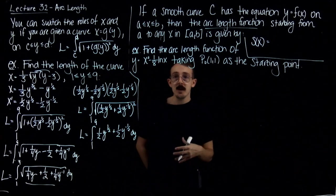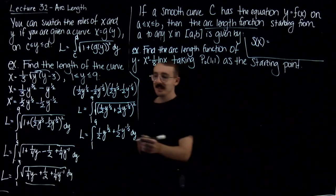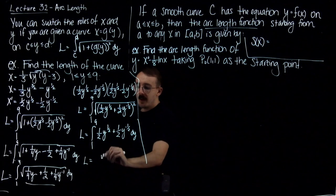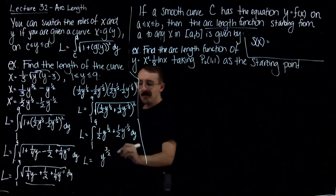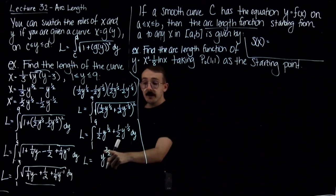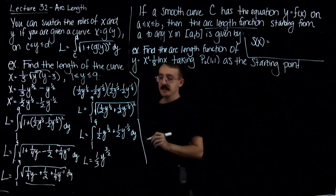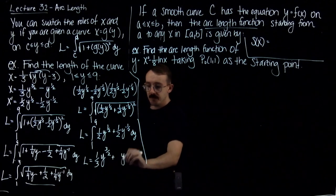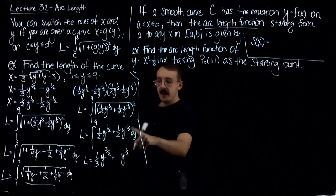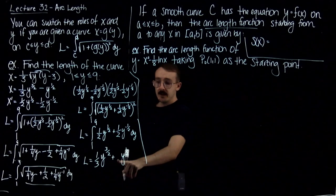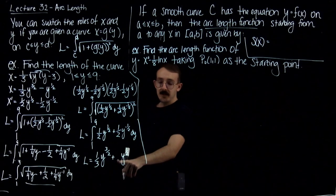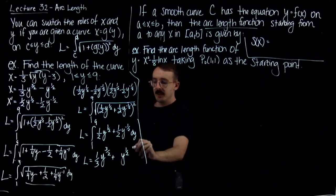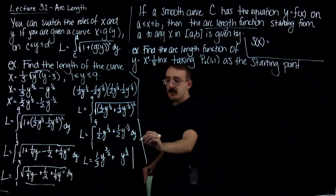If you have a quantity squared inside a radical, they cancel out. So we get the integral from 1 to 9 of 1/2 y to the 1/2 plus 1/2 y to the negative 1/2. Now we can integrate this using the power rule backwards for both terms. Integrating y to the 1/2 gives y to the 3/2 times 2/3, and with the 1/2 coefficient out front the new coefficient is 1/3. For the second term, integrating y to the negative 1/2 gives y to the 1/2, and the 1/2 coefficient stays — so we have 1/2 y to the 1/2. Evaluate from 1 to 9.